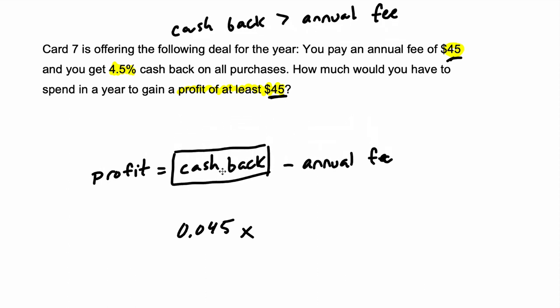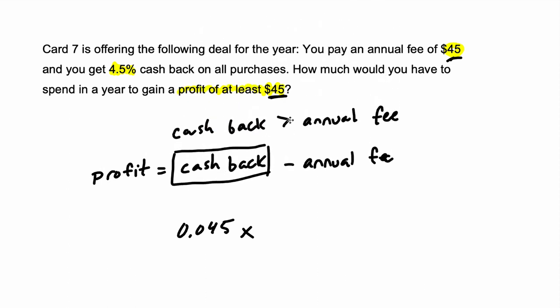So the first idea is that cash back has to be greater than your annual fee in order for there to be a profit. And the profit we're getting is going to be equal to the cash back we get. In our case right here, this cash back is 4.5% of all we spend. And then we're taking away the annual fee.